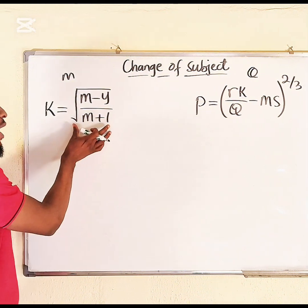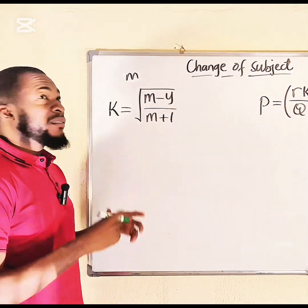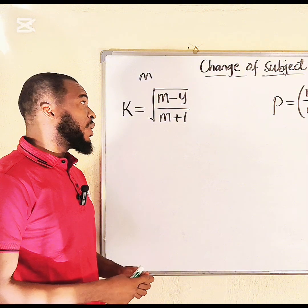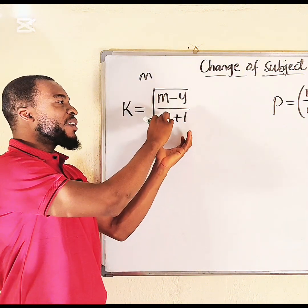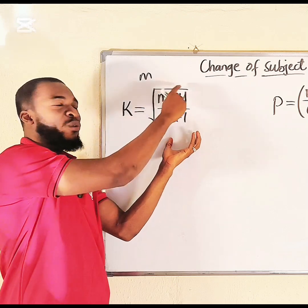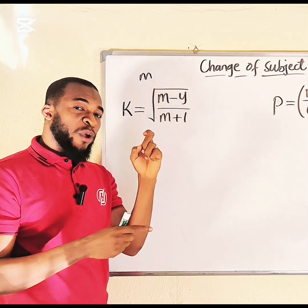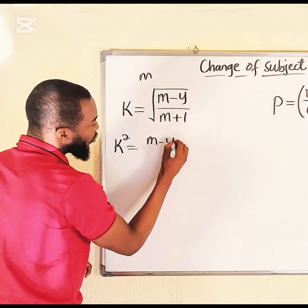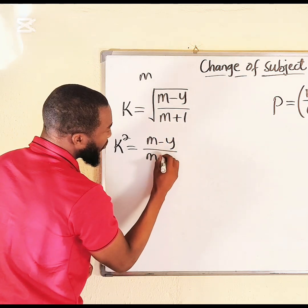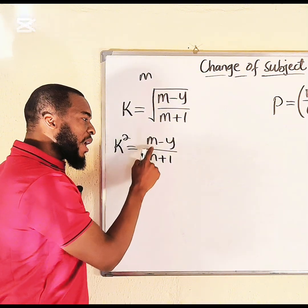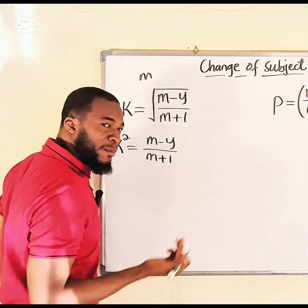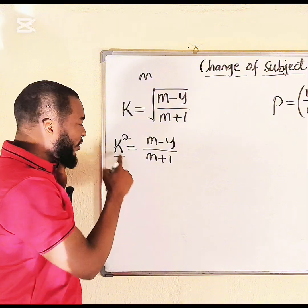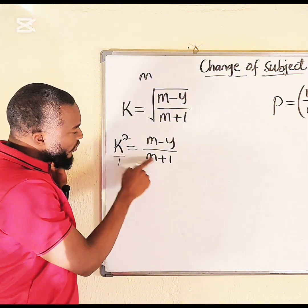Now let's make m the subject of the first equation. We have a square root, and everything inside — (m − y)/(m + 1) — is one family. We must get rid of the square root first. The inverse of square root is squaring, so squaring both sides gives k² = (m − y)/(m + 1). We have m appearing twice, so we cross-multiply to bring them together: k²(m + 1) = m − y.